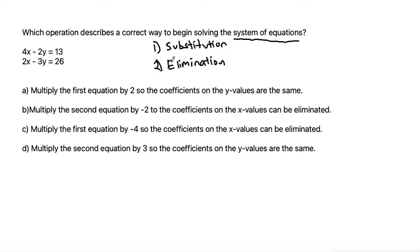So using the strategy of elimination, we generally want to make the coefficients on the same variable be the same number but opposite sign. So let's see what happens if we use option A.